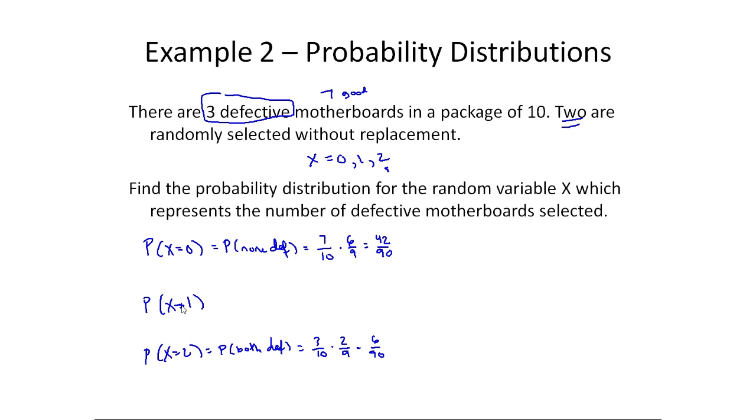Now x equals one means one is defective and one is not. That could happen two ways—it could be the first one's bad or the second one's bad. However, I can use the idea that a probability distribution covers all possibilities. So my probability distribution is going to be x, probability of x, and it's going to be zero, one, and two.